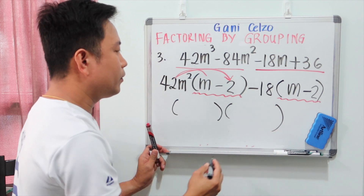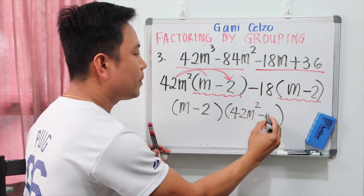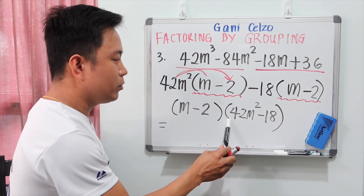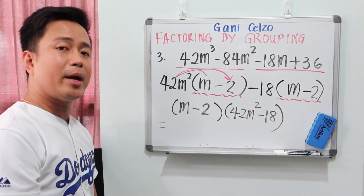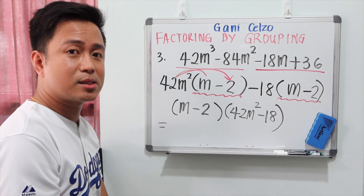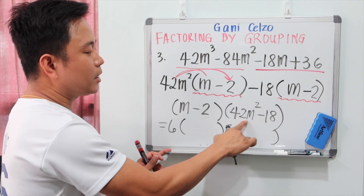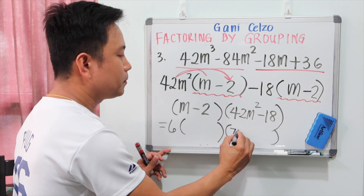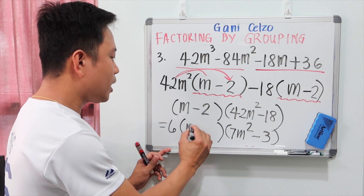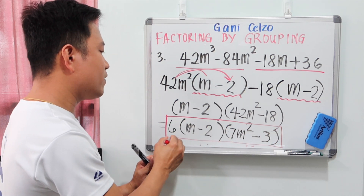So for each group, m minus 2 is the common factor. The outside terms are 42m squared minus 18. But we can do one more step — since 6 is the GCF of 42 and 18, we factor out 6 from 42m squared minus 18, giving 6(7m squared minus 3). So the final answer is 6(m minus 2)(7m squared minus 3). We always need to factor polynomials completely.